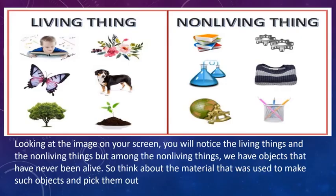Now let's look at living things and non-living things together. Looking at the image on your screen, you will notice living things and non-living things. Among the non-living things, we have objects that have never been alive. Think about the material used to make such objects. You can see an item made from metal and a glass material — these are items that have never lived.